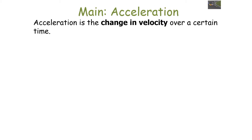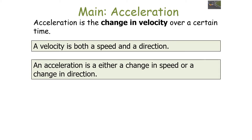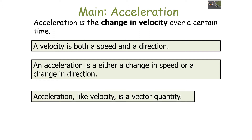Acceleration is the change in velocity over a certain time. We should be aware that velocity is both a speed and a direction, so this means an acceleration is either a change in speed or a change in direction. Because you've got a direction in your acceleration quantity, this means that acceleration, like velocity, is a vector quantity.